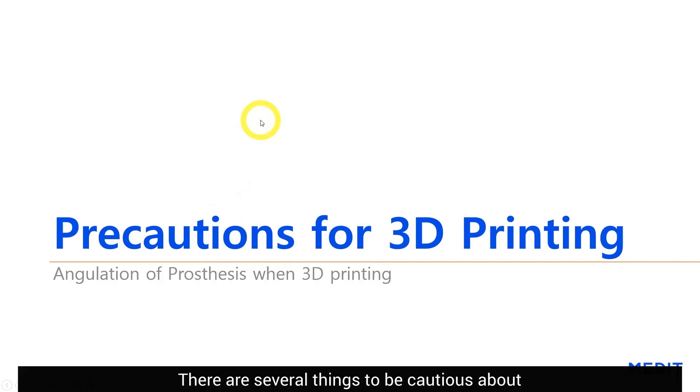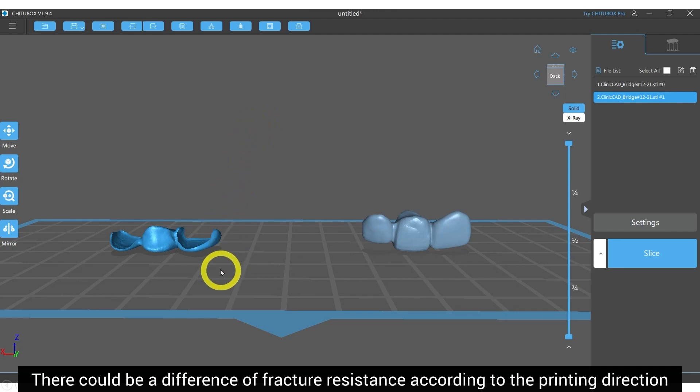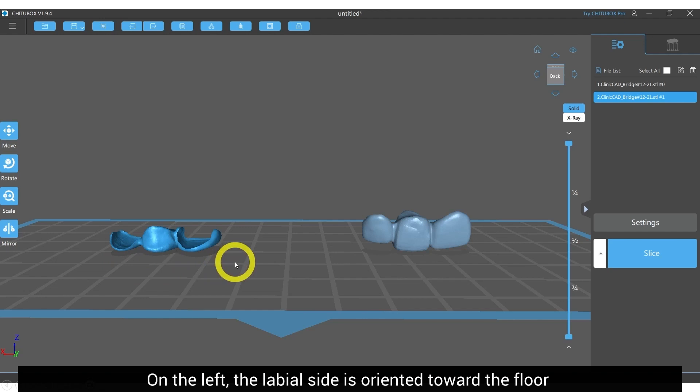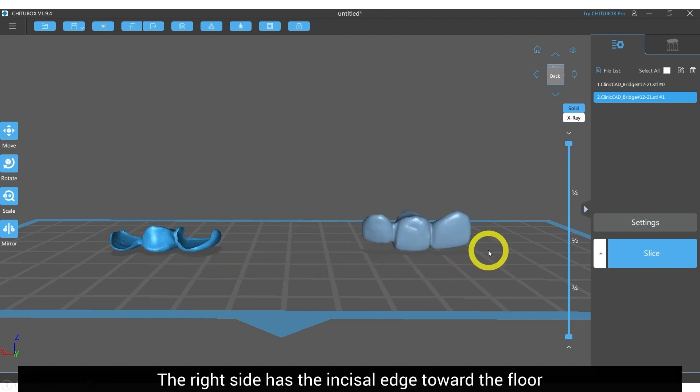There are several things to be cautious about. There could be a difference of fracture resistance according to the printing direction. On the left, the labial side is oriented toward the floor to minimize the height of the output. The right side has the incisal edge toward the floor.